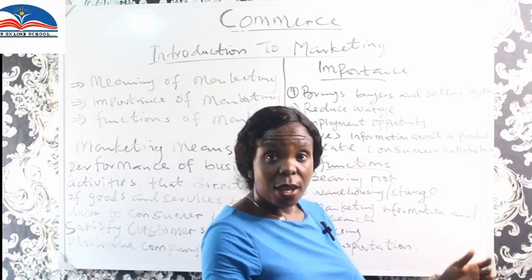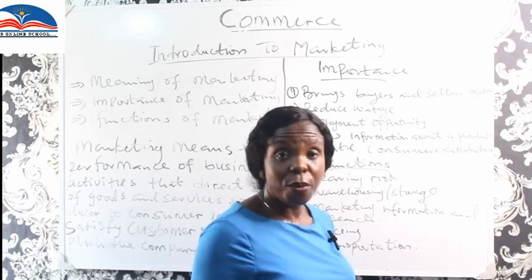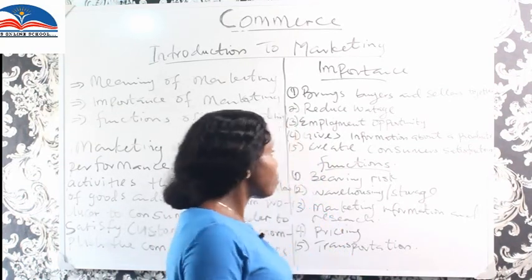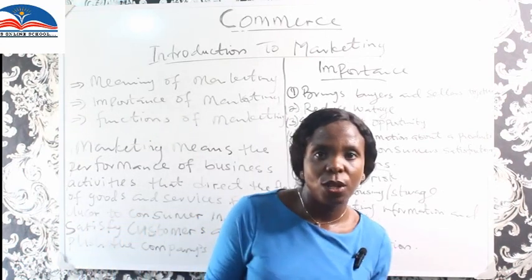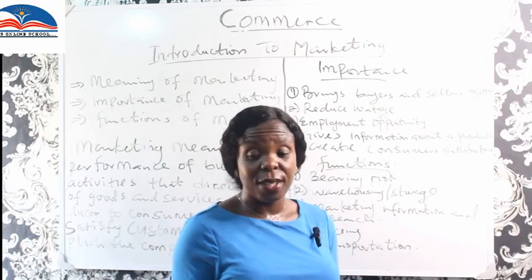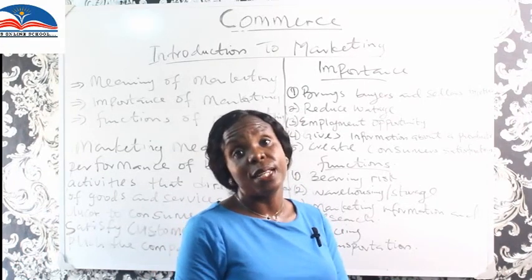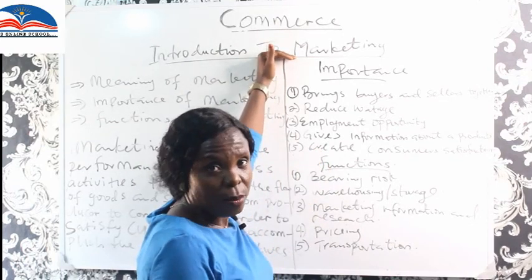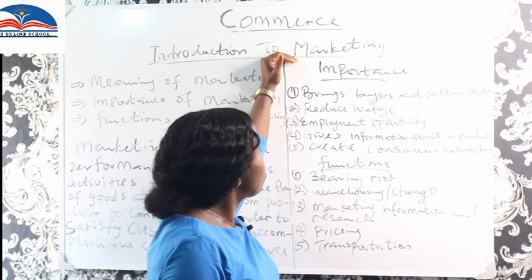Number four: marketing gives information about the product — how it can help in business, in daily life, to improve standard of living, health, and productivity. You will tell me why I should buy that product. Number five: marketing creates consumer satisfaction. It helps the consumer know that these products will satisfy them, and you go back to the manufacturer with information from the consumer, telling them what will satisfy the consumer and how to meet their needs. That covers five importances — I have up to ten. Tell me more in the comment box below.